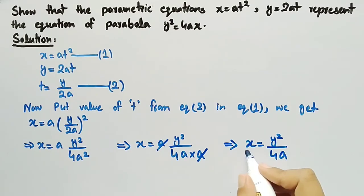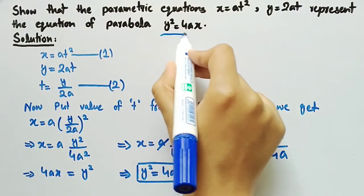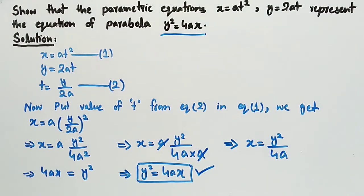Now, by multiplying 4a on both sides, we get 4ax equals y squared, which can also be written as y squared equals 4ax. This is the same equation as given in the question, which means that the parametric equations x equals a t squared and y equals 2at represent the equation of parabola y squared equals 4ax.